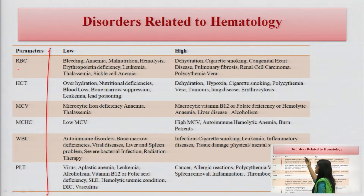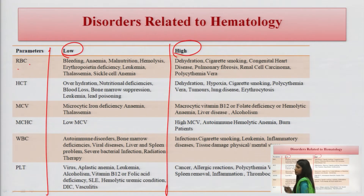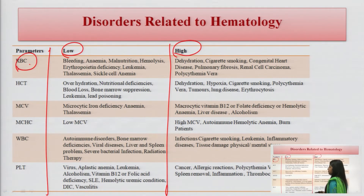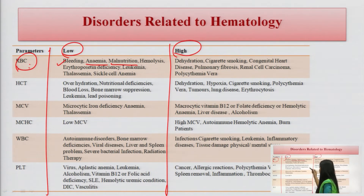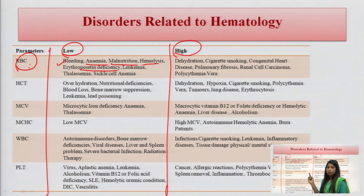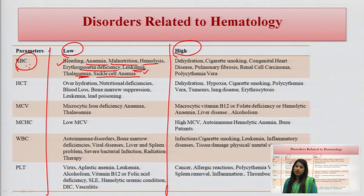Now we'll look at RBC deviations — why they deviate, reasons for low levels, and reasons for high levels. Low RBC levels are associated with: bleeding, anemia, malnutrition, destruction of RBCs (hemolysis), erythropoietin deficiency (since erythropoietin is responsible for RBC formation), leukemia, thalassemia (an inherited disease with low RBC levels), and sickle cell anemia — where a change in cell shape causes cells not to function properly.